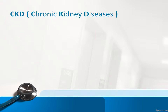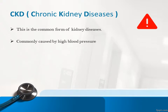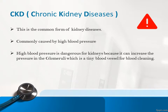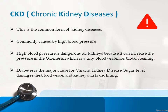Chronic Kidney Disease is a common form of kidney disease commonly caused by high blood pressure. High blood pressure is dangerous for kidneys because it can increase the pressure on the glomeruli, which are tiny blood vessels responsible for blood cleaning. Diabetes is also a major cause of chronic kidney disease, as high sugar levels damage the blood vessels and kidney function starts declining.